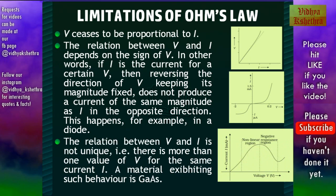Then third one is the relation between V and I is not unique. That is, there is more than one value of V for the same current I. A material exhibiting such behavior is gallium arsenide.